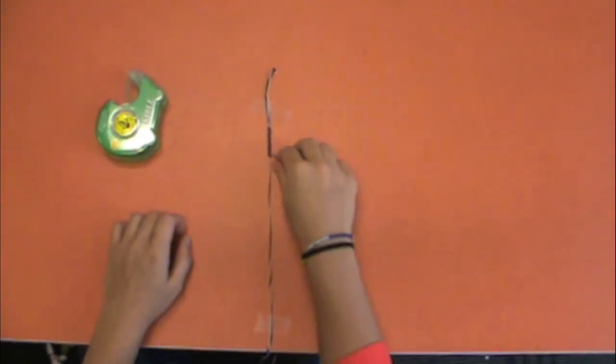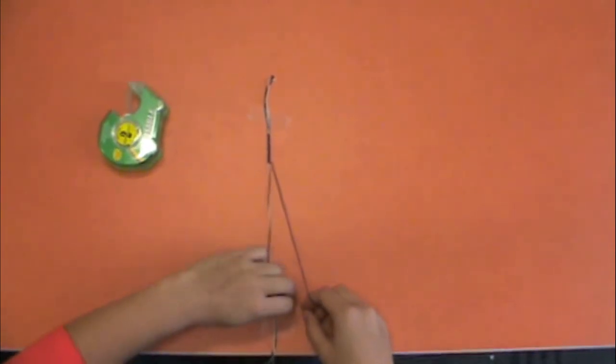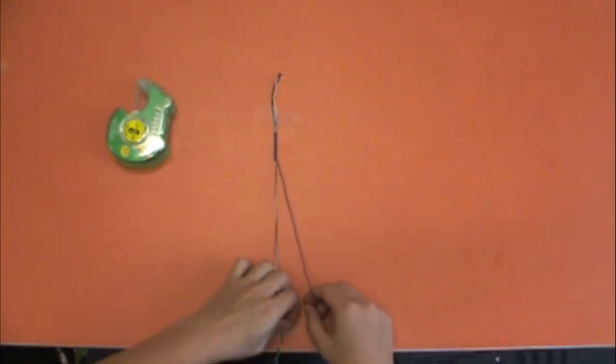After you have the color down as far as you want it, you can switch colors. You're going to take the tape off of the table.